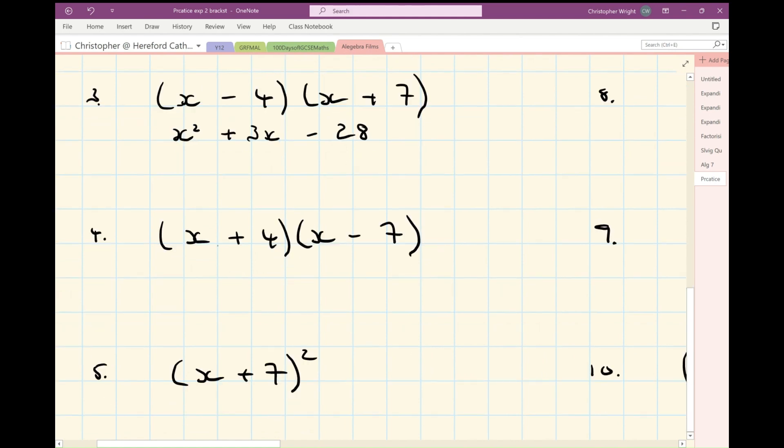And number four, x times x is x squared, plus four x's, minus seven x's, minus three x, minus seven fours at 28.